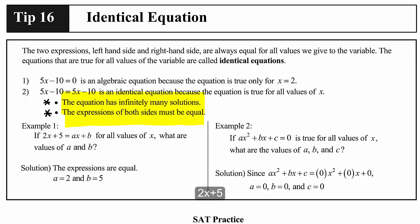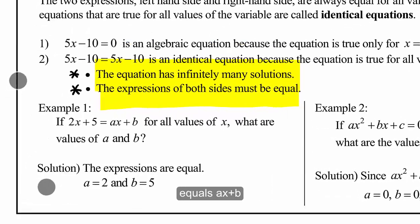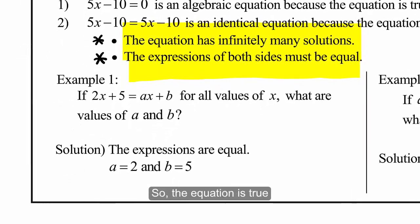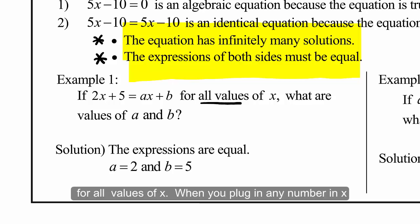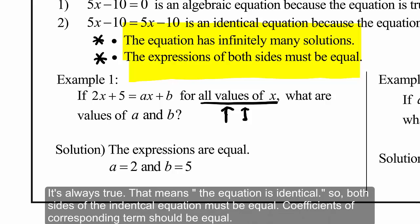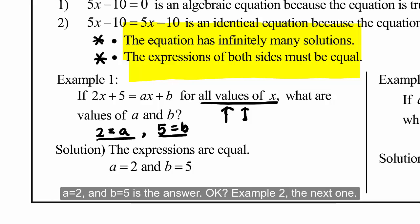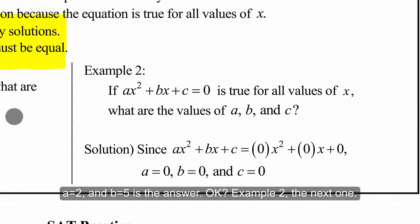Example one: 2x + 5 = ax + b, for all values of x. The equation is true for all values of x — when you plug in any number for x, it is always true. That means the equation is identical. Both sides of the identity equation must be equal, so the coefficients of corresponding terms should be equal. Therefore, a = 2 and b = 5.